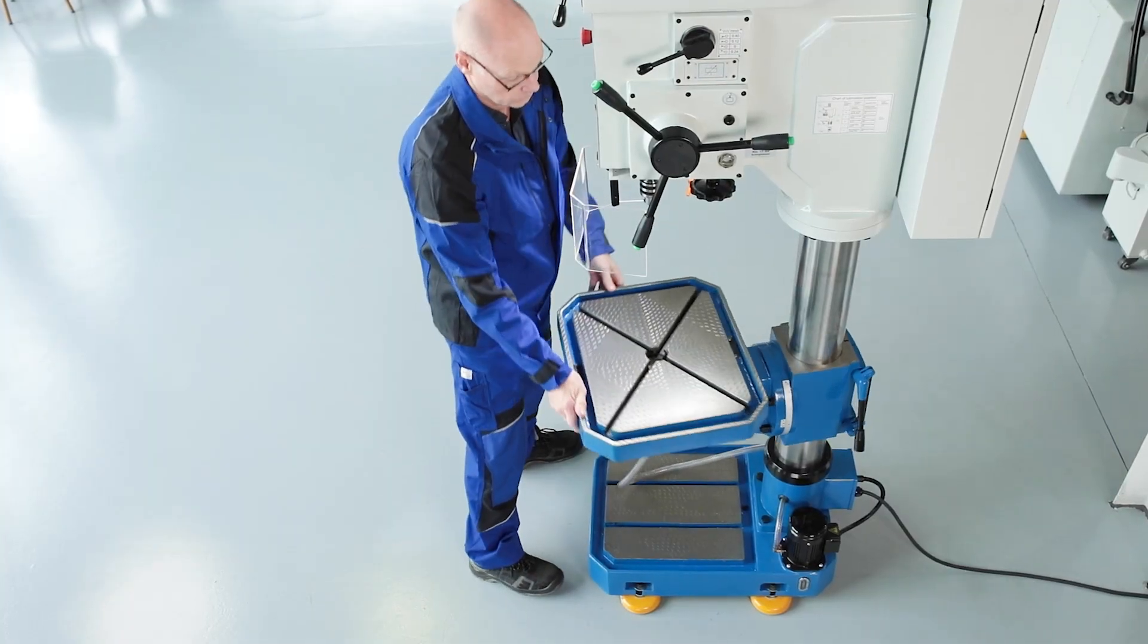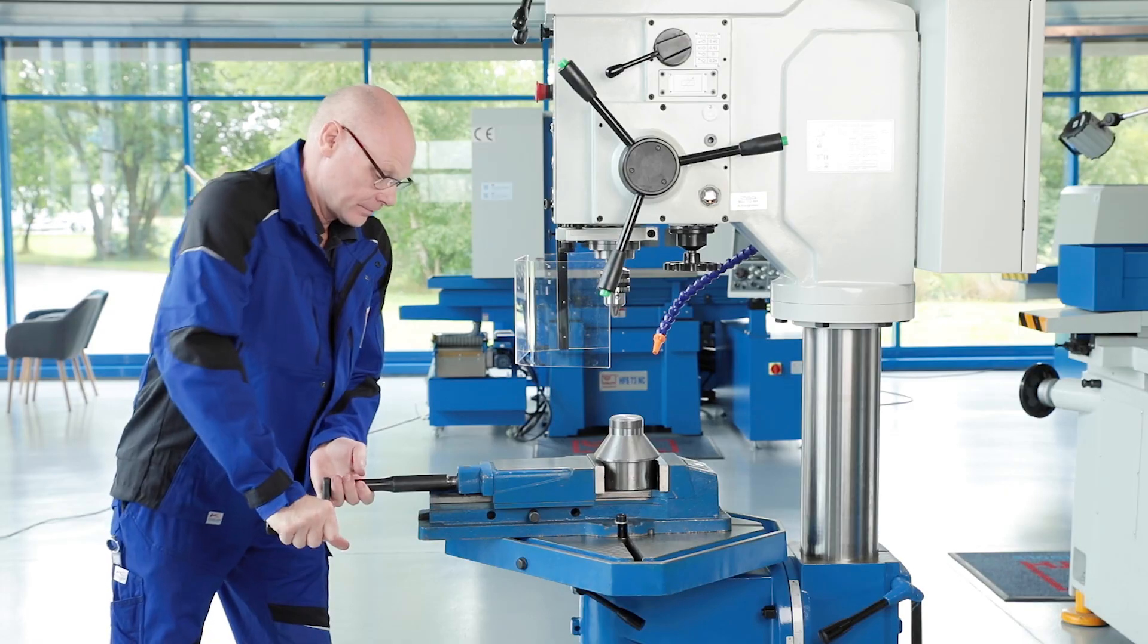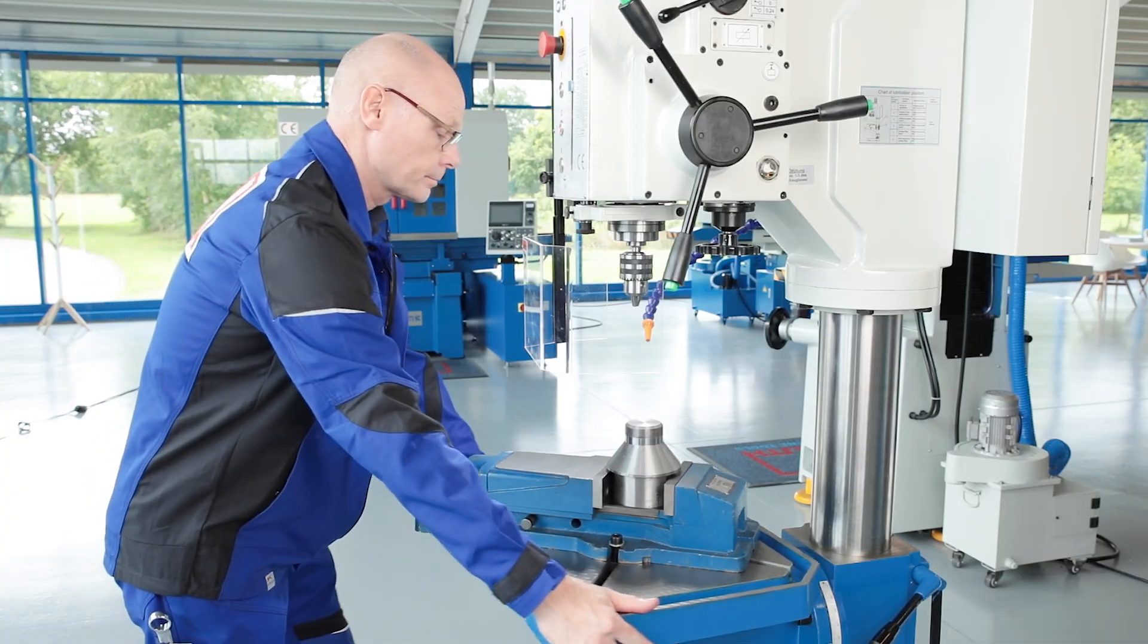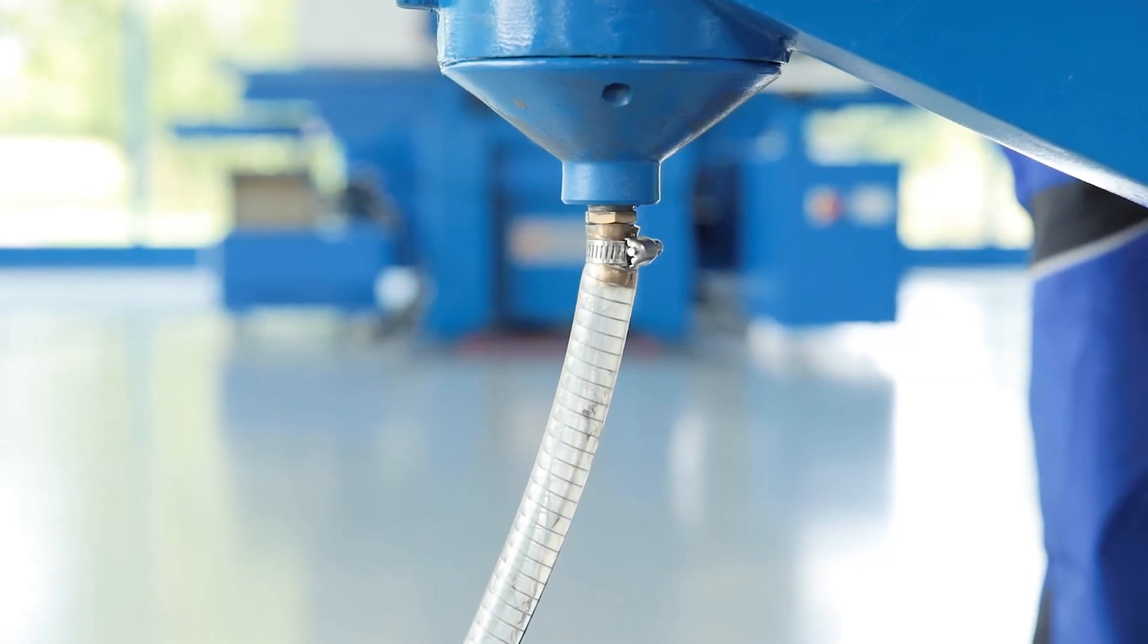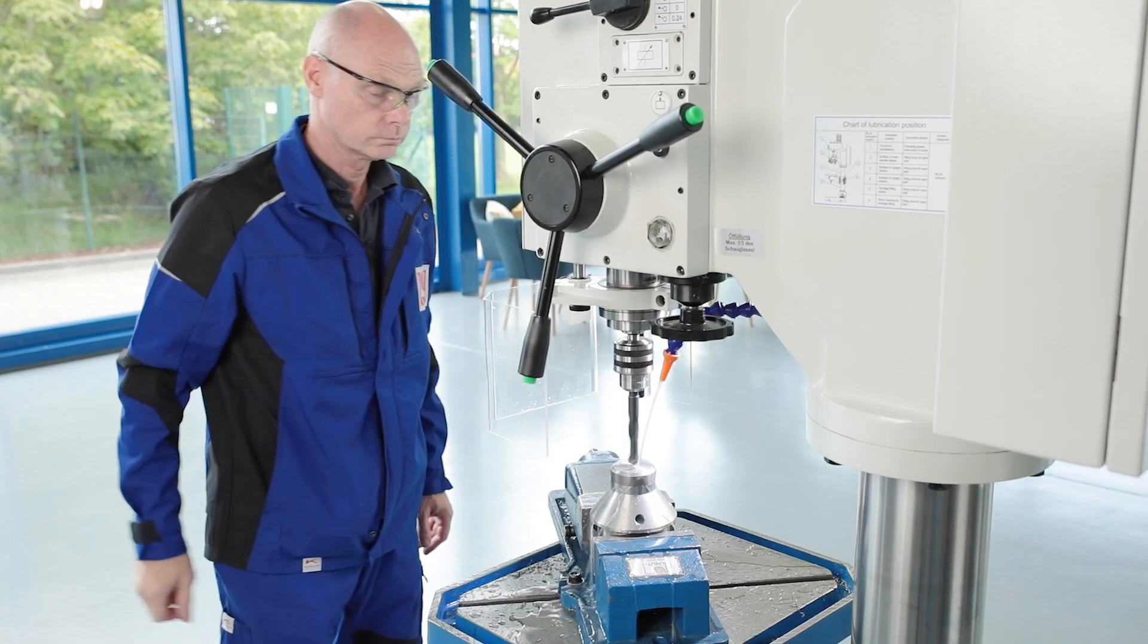Cross-shaped T-slots offer a particularly large number of clamping options even beyond the table. In addition, its rotability facilitates the alignment of work pieces and clamping devices. Coolant is fed through centrally so the table may be rotated as often as required without any problems.